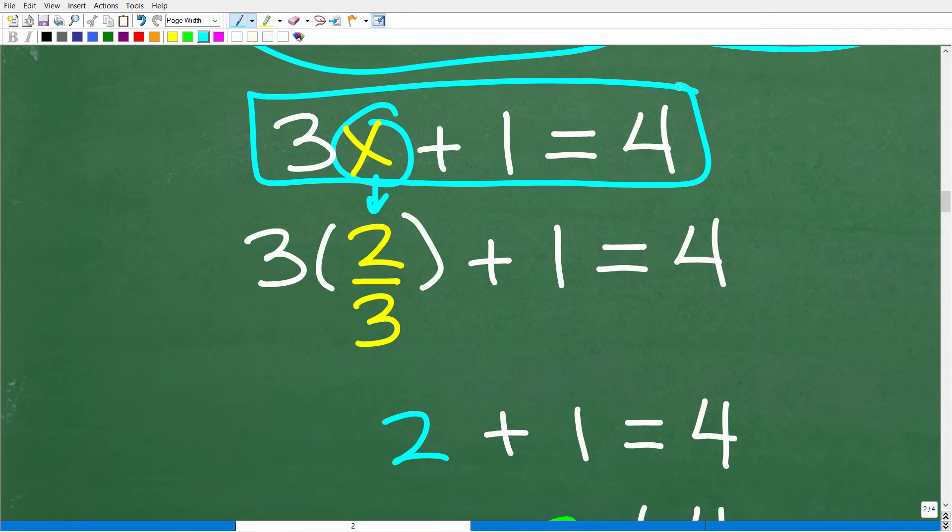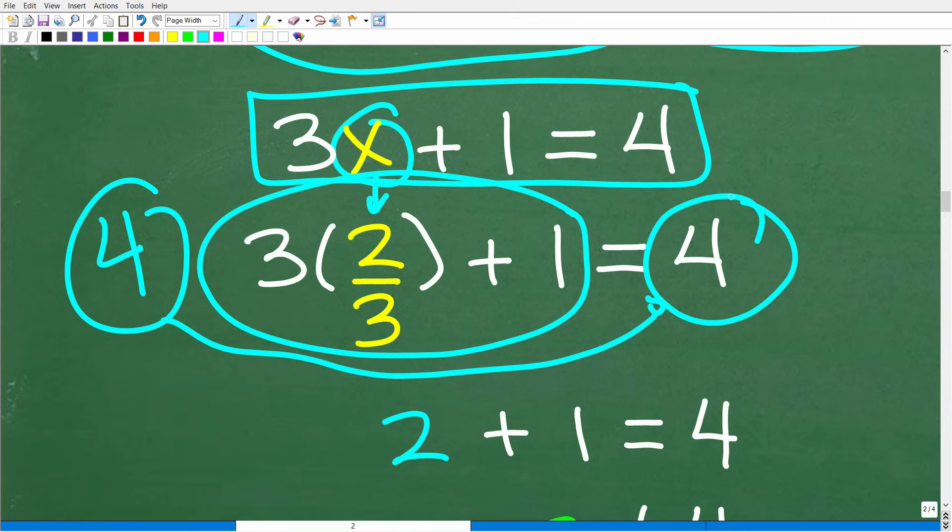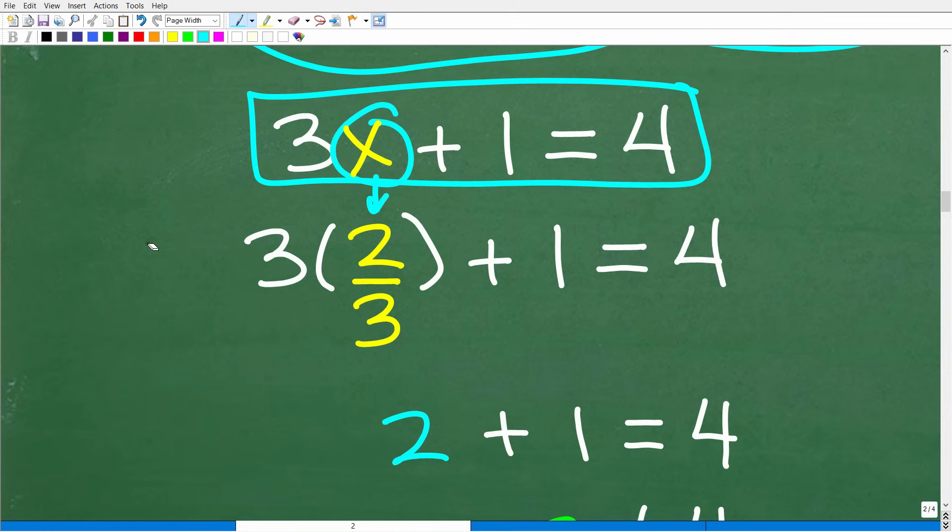OK, so here's the equation. And if this is the correct solution, when I do all this math over here, it should be four. OK, because this has to be four because the other side of the equation is four. So let's just go ahead and do this basic number crunching right here.